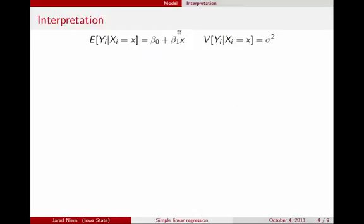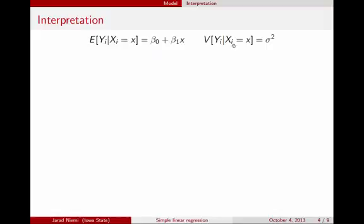Hopefully you can recognize the equation for a line — you might be used to seeing y equals mx plus b or y equals a plus bx. This is exactly the same, except that now on the left side we have the expected value for y. So this is what we expect the response to be for a particular value of our explanatory variable x: beta 0, some intercept, plus beta 1, the slope, times x. That describes the mean — what we see on average. But there's also variability around the line, described by the variance. The variance of the observation, conditional on knowing x, is sigma squared, and this sigma squared does not depend on x — the variability around the line is constant everywhere.